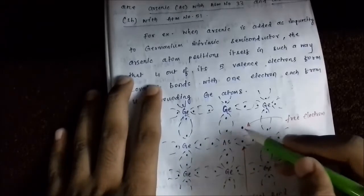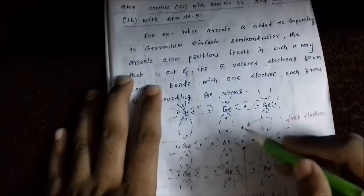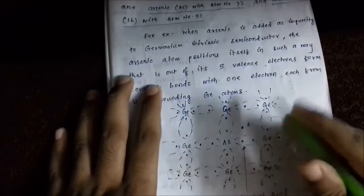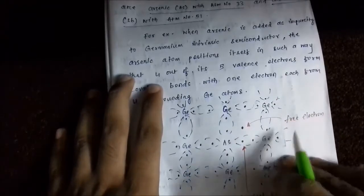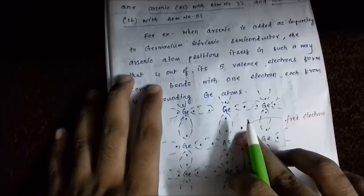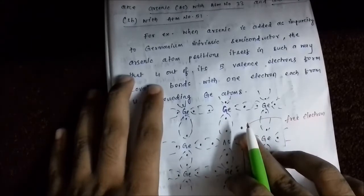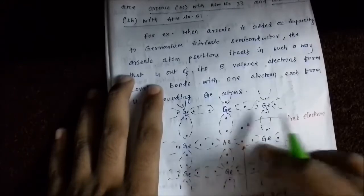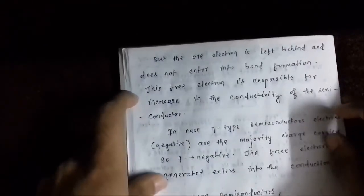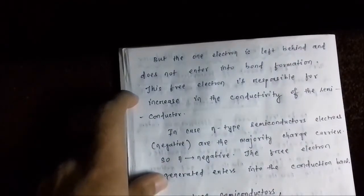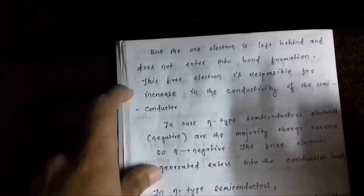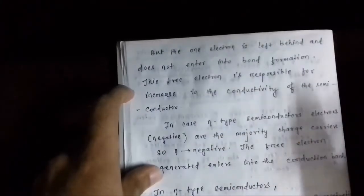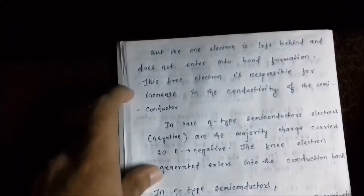This free electron enters into the conduction band of the germanium semiconductor atom. It is this free electron which is responsible for current conduction in the N-type extrinsic semiconductor. The one electron which does not participate in the covalent bond formation enters into the conduction band of the germanium semiconductor and is responsible for current conduction.